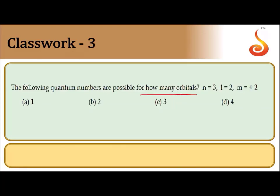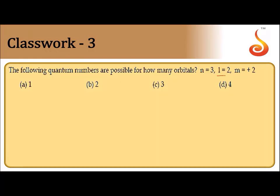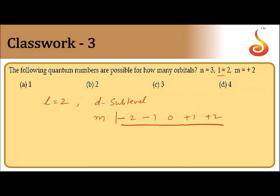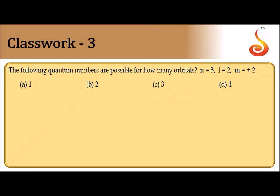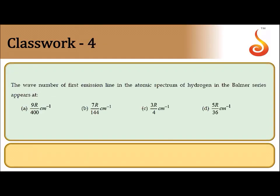Third question: the following quantum numbers are possible for how many orbitals? Given n=3, l=2, which corresponds to the d sub-level. For the d sub-level, m can take 5 values: −2, −1, 0, +1, +2. Since the given value is m=+2, it indicates only one orbital. Therefore the answer is option A.